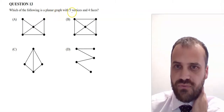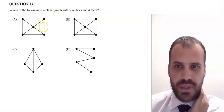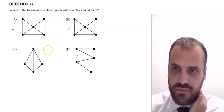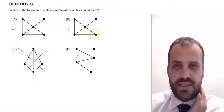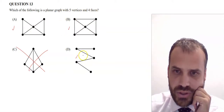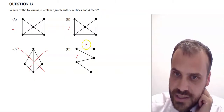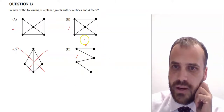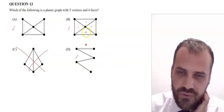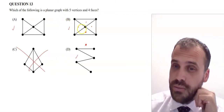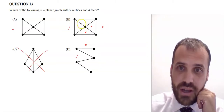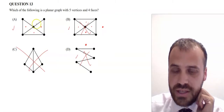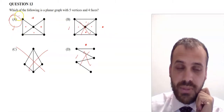Question thirteen: which is a planar graph with 5 vertices and 4 faces? Counting vertices eliminates option D (only 4 vertices). For faces, remember the outer region counts as a face too. Option B looks promising with 3 enclosed faces, but including the outer face gives 5 faces — too many. Process of elimination points to option A. Checking: 5 vertices, and counting faces including the outer face gives exactly 4 faces. Answer: A.